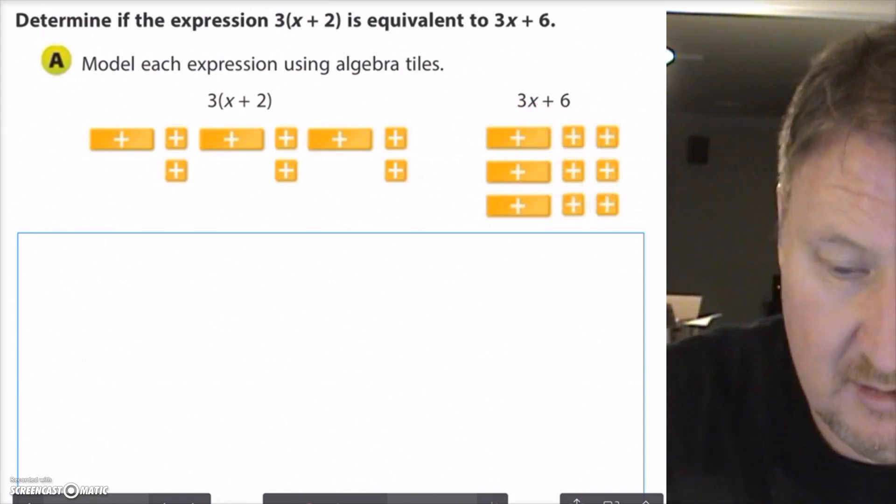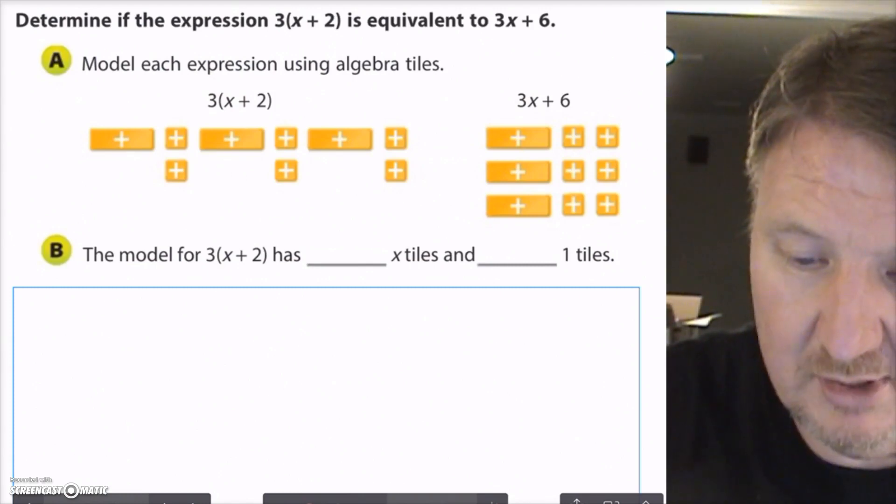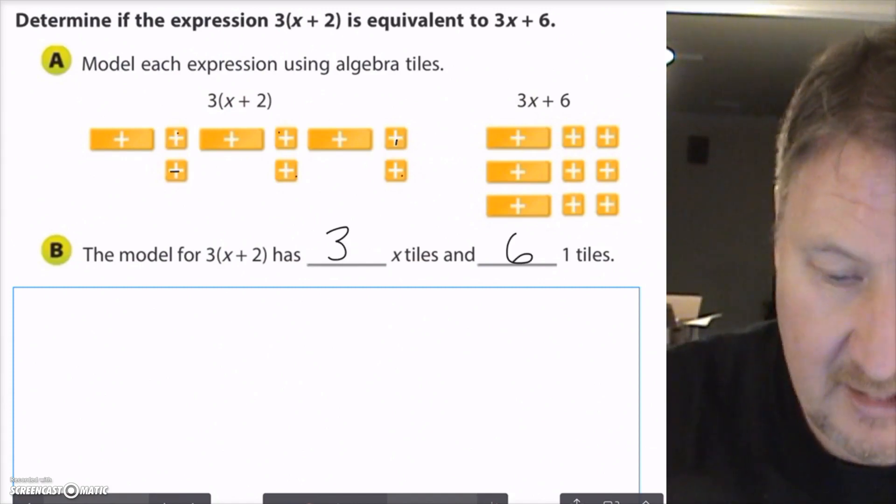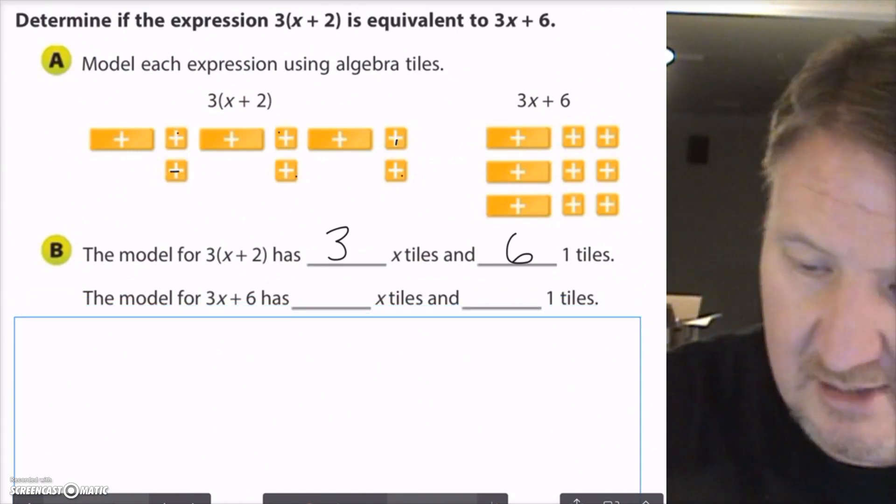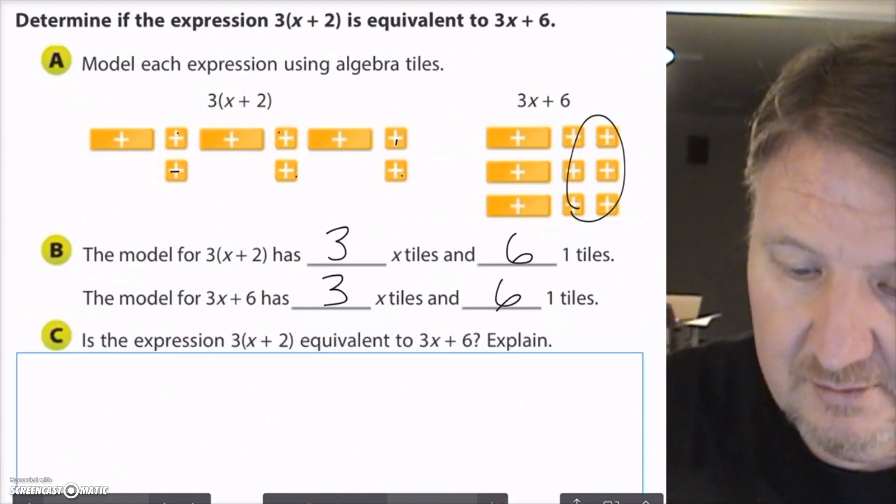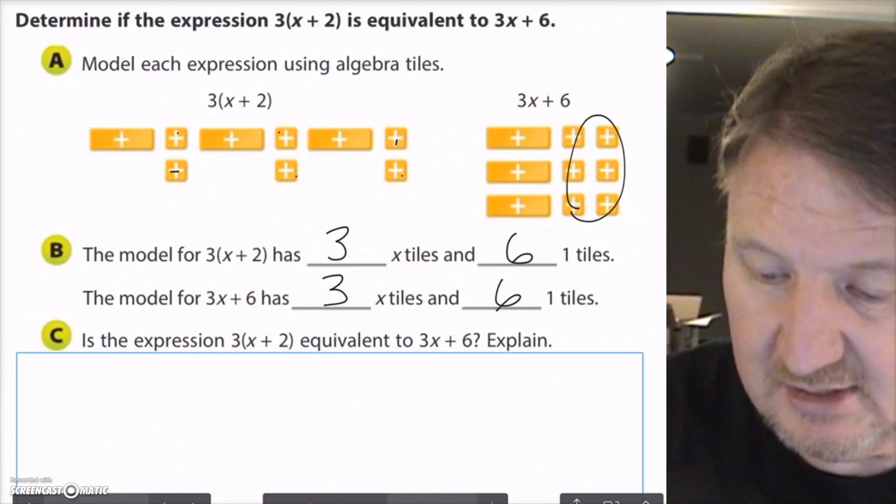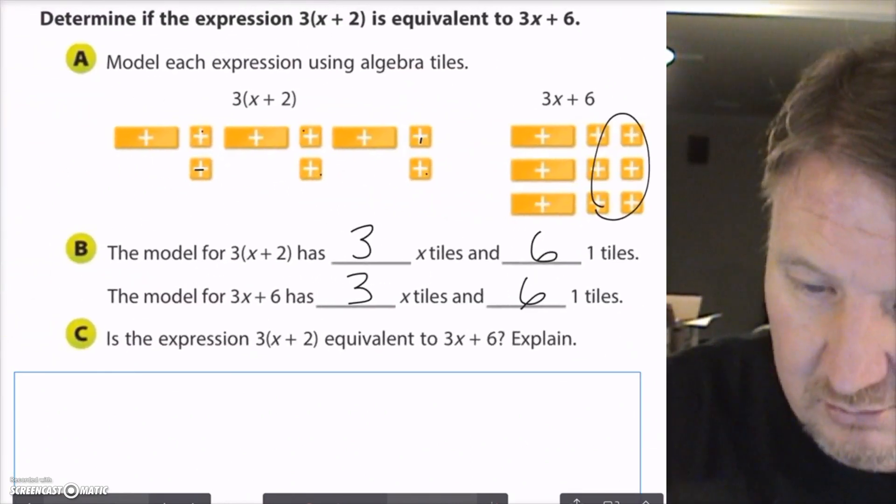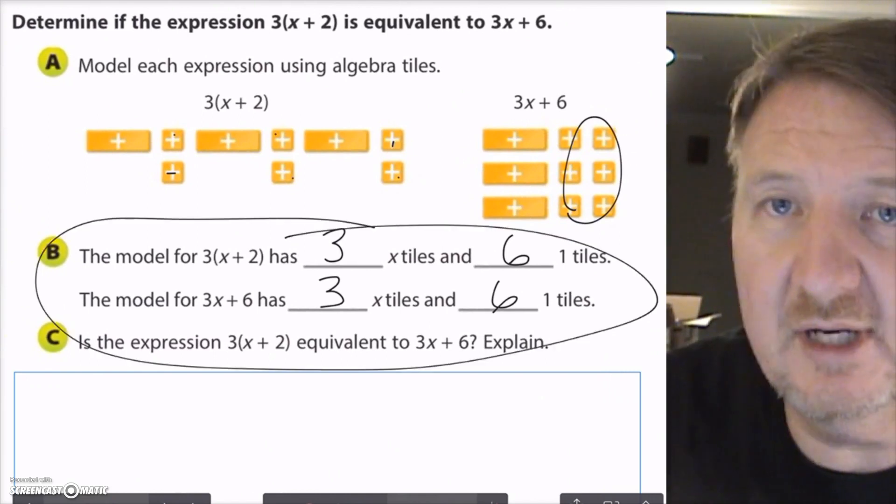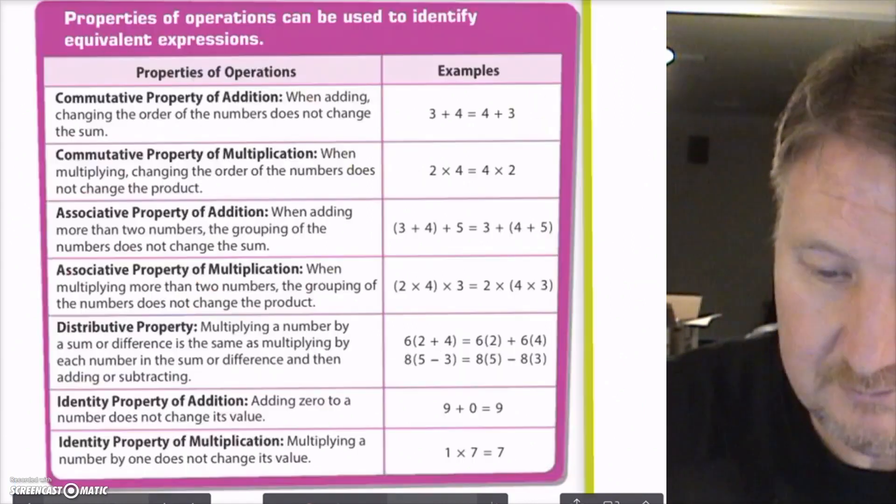So then what I want to do is say, the model for 3 times x plus 2 has how many x tiles? Well, it has 1, 2, 3 x tiles. And it has 6, 1, 2, 3, 4, 5, 6, 1 tiles. And then I go down here and do the same thing. The model for 3x plus 6 has 3 x tiles and it has 6 one tiles. So guess what, boys and girls? The expression 3 times x plus 2 is equivalent to 3x plus 6. And it says explain. Well, we just did with this problem, by saying that each one has the same number of x tiles as they do each other, and then you have the same number of 1 tiles as well.